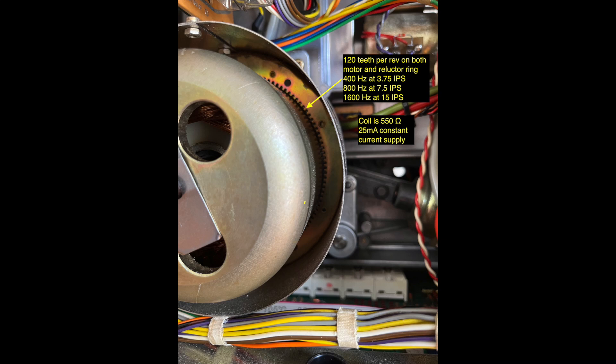120 times per revolution, the magnetic reluctance changes through one cycle. A small regulating current flowing through the VR coil is influenced by this, causing a ripple in the current.